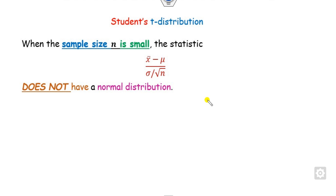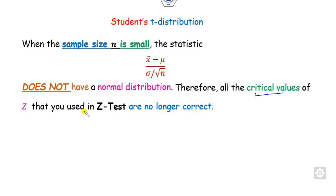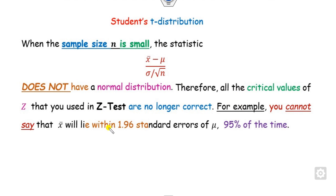What we have discussed so far is that in our last lectures, we have seen how you can solve the z-test. This is the formula for the z-test, provided that n must be greater than 30 — this is the large sample case. But what will happen if your sample size is small? This z-statistic will not follow the normal distribution, meaning all those critical values used in the z-test are no longer correct. For a 95% confidence interval, we know the sample mean lies within 1.96 standard deviations, but whenever this condition does not hold, we cannot say the sample mean will lie between them.